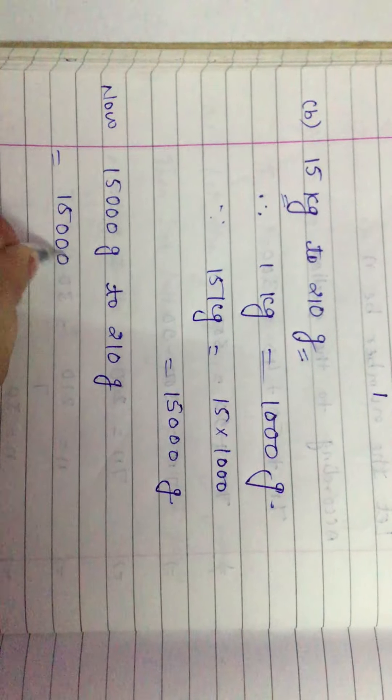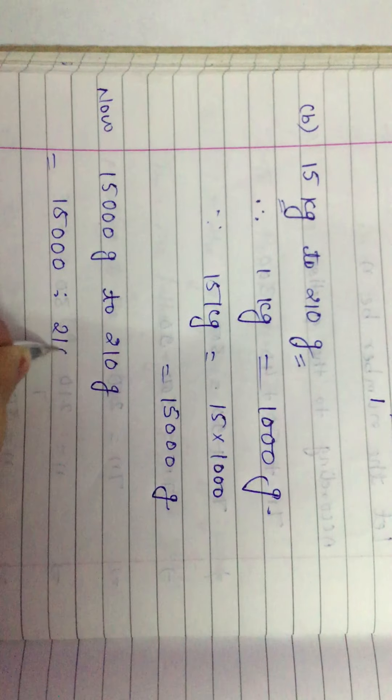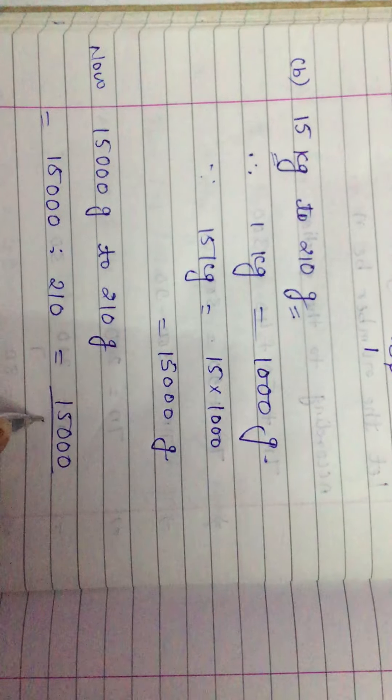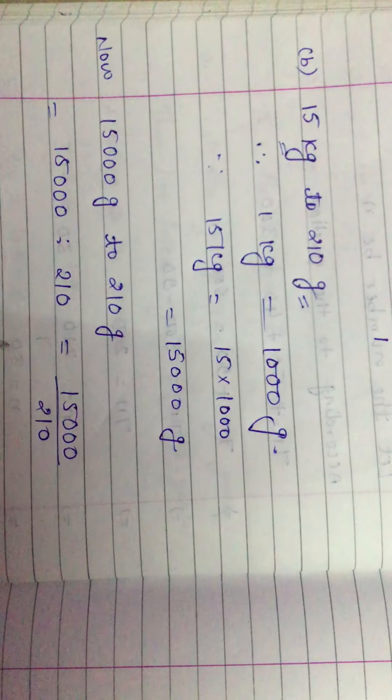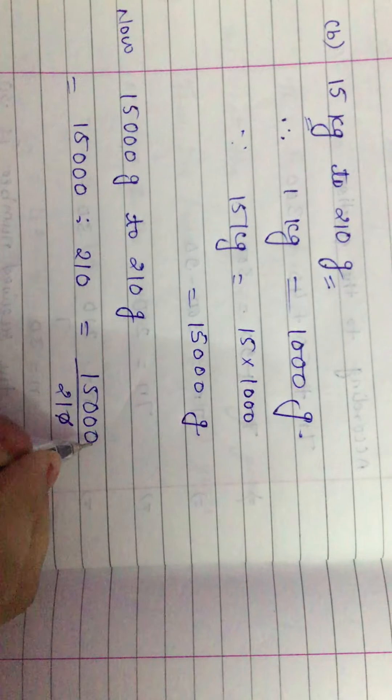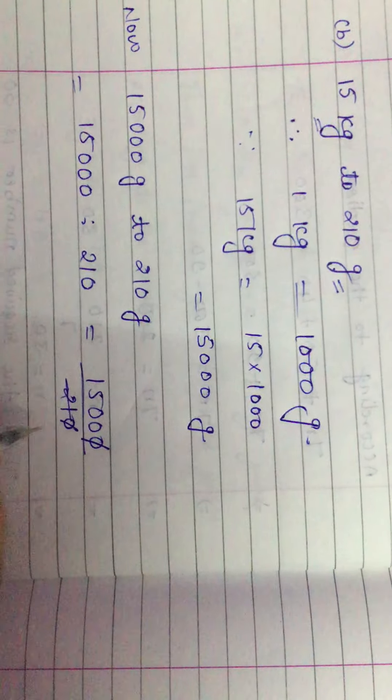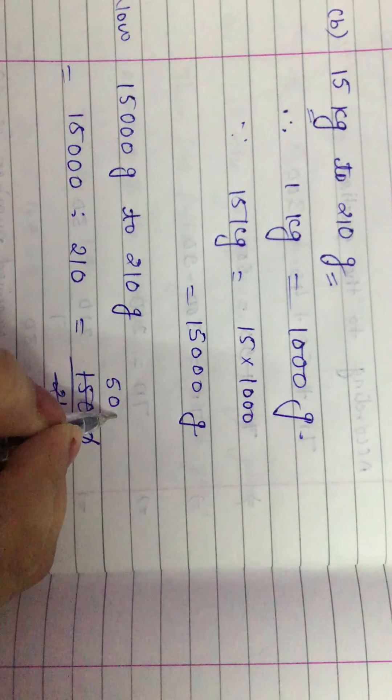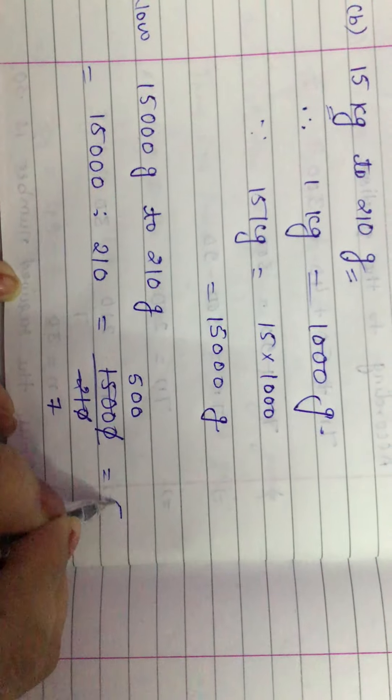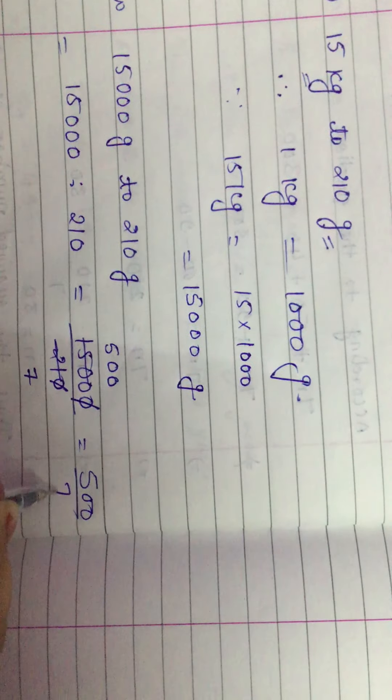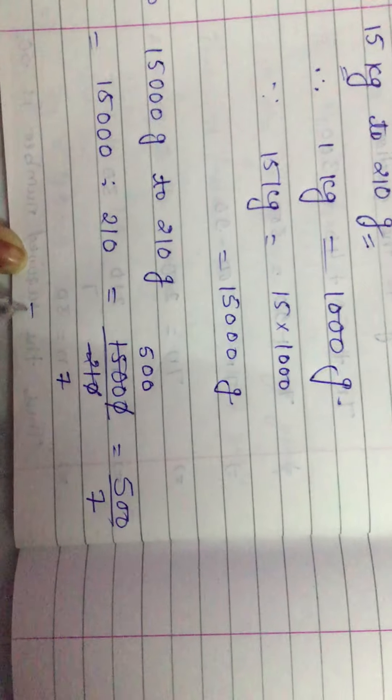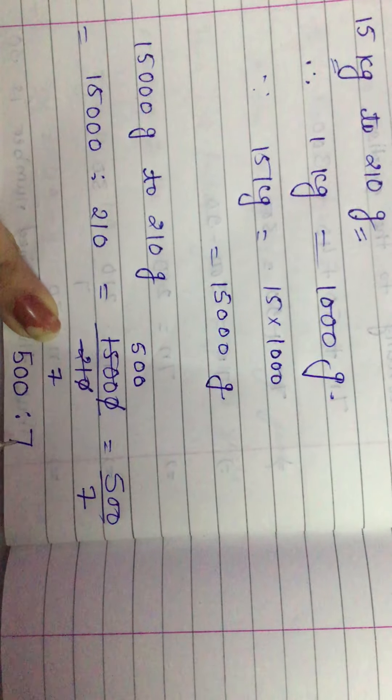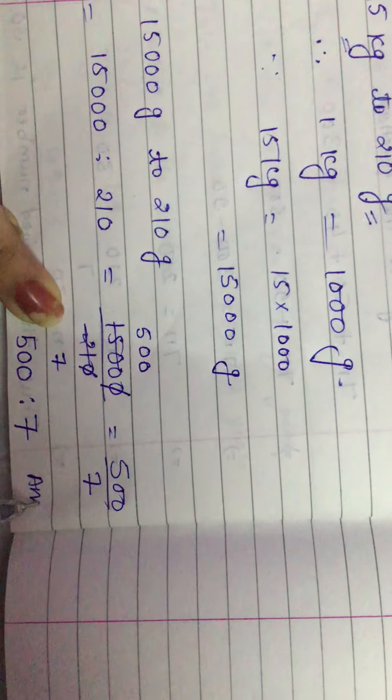15,000 ratio 210. We can write in fraction form: 15,000 upon 210. Now we can cut short: 00, 3 sevens are 21, 3 fives are 15, and 00. At last 500 upon 7. Now we can write in ratio. So 500 ratio 7 is the answer.